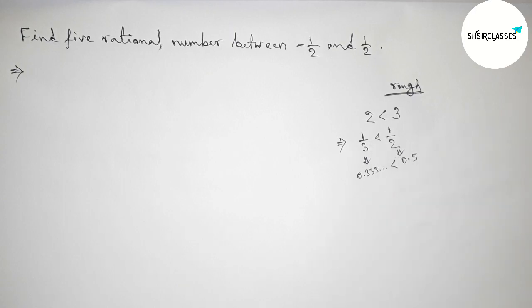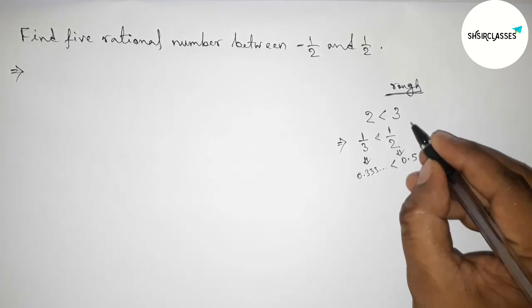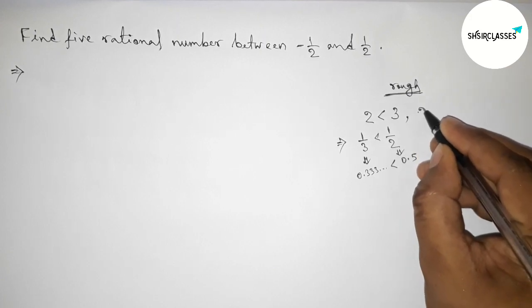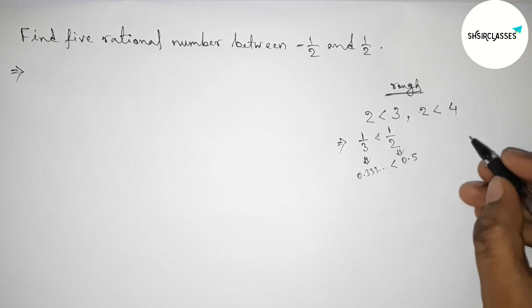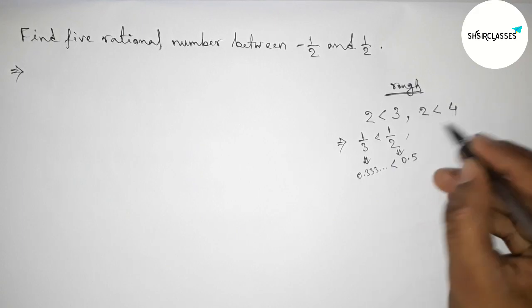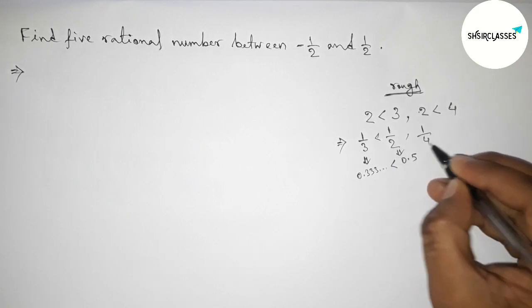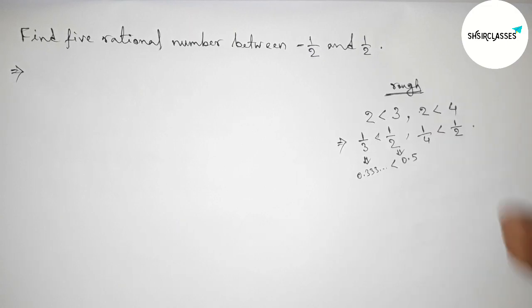Now again, similarly if you take here a number which is greater than 2, that is 4, then by similar way we can say that 1 by 4 less than 1 by 2. Now for the negative case.